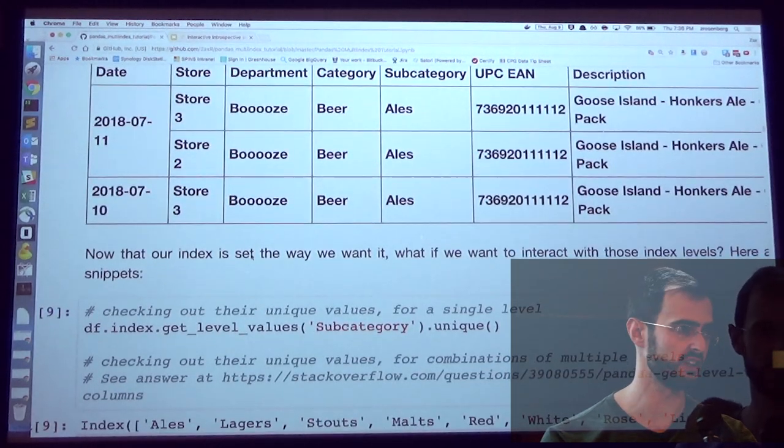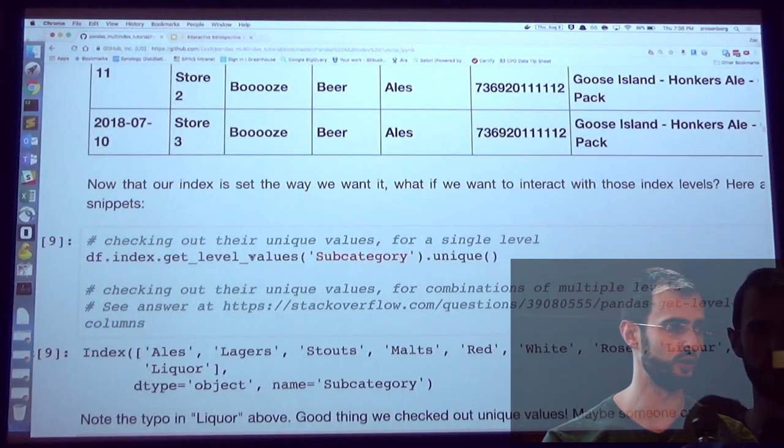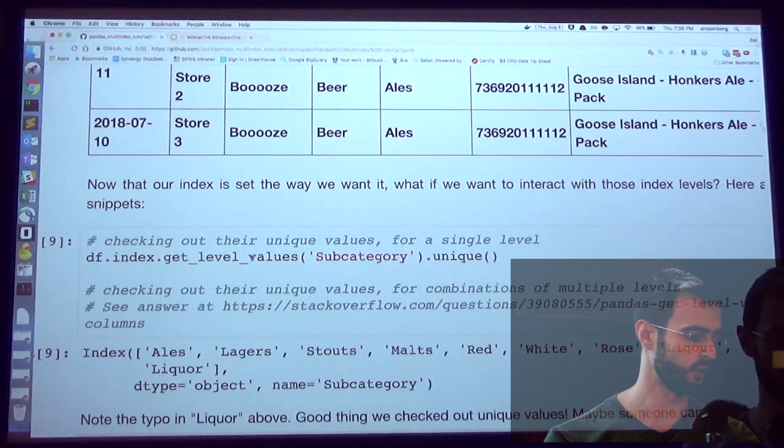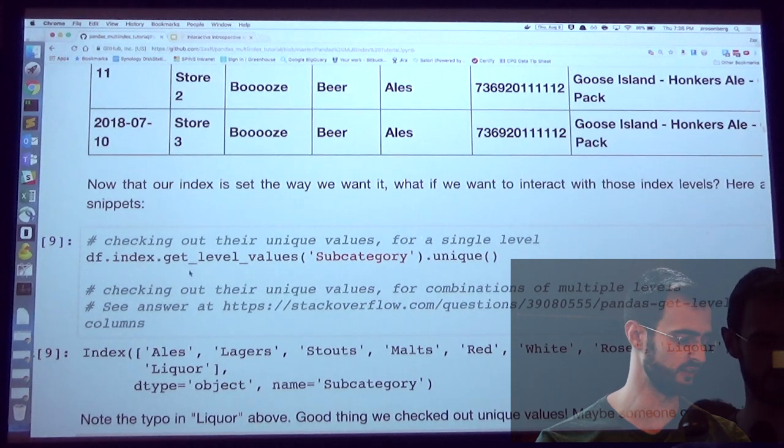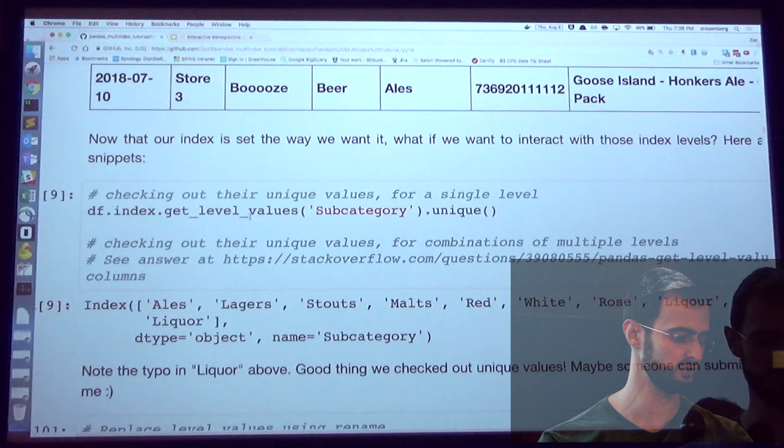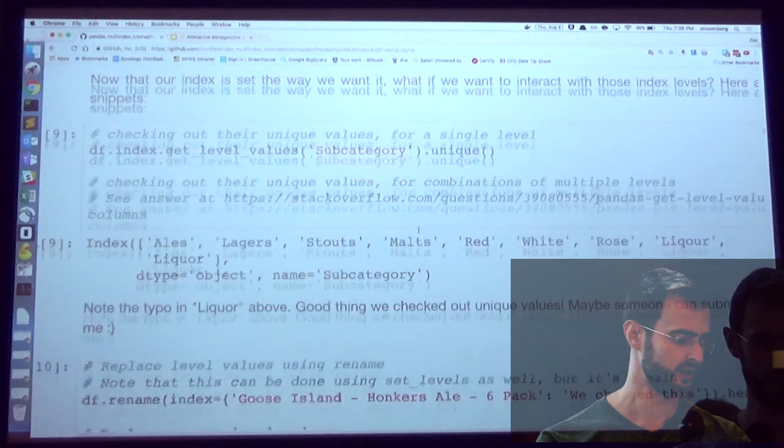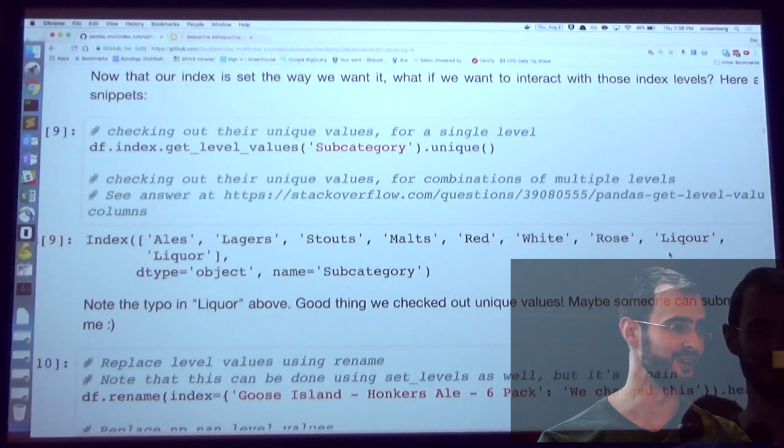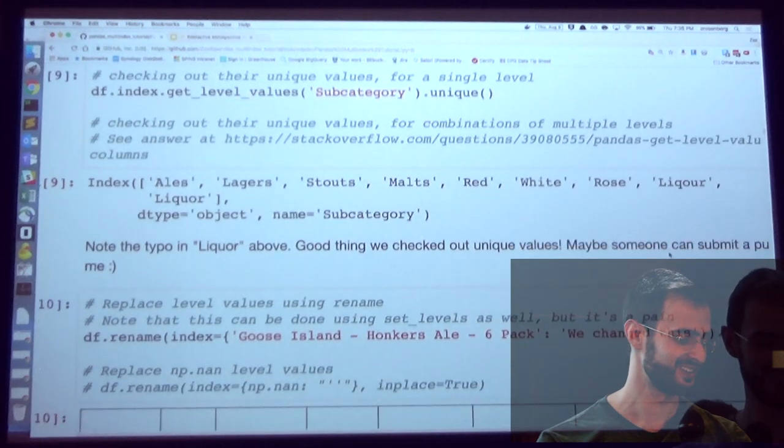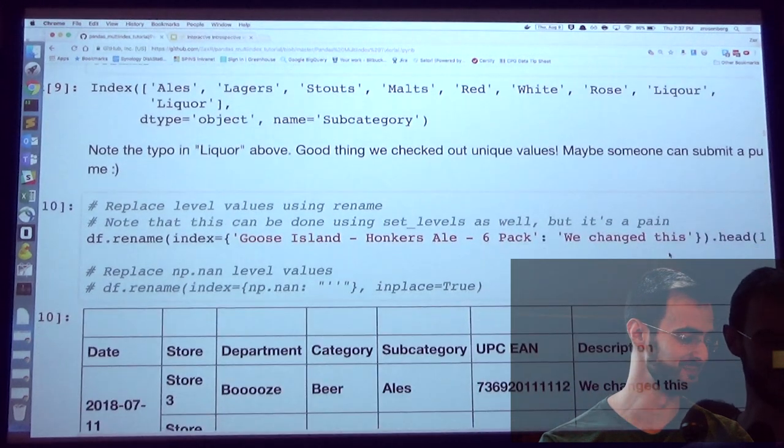So we have a multi-index object now. It looks pretty much like a data frame. We're going to see that if we want to interact with those index levels though, interacting with indexes doesn't work like columns. And so I can't just do data frame, open brackets, the name of the column, to interact with each of these index levels. So there's a method called get_level_values. So I'm going to get all of the values in my subcategory column. And here I want to see just the ones that are unique. And so it'll print out this object for me. I have ales, lagers, stouts, malts for beer, red, white, rosé for wine, and liquor and misspelled liqueur for liquor.